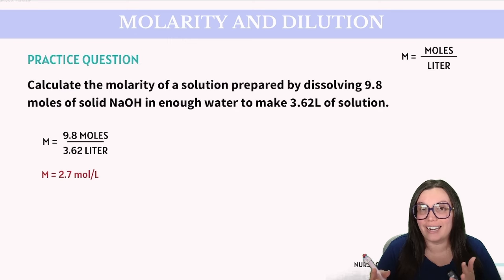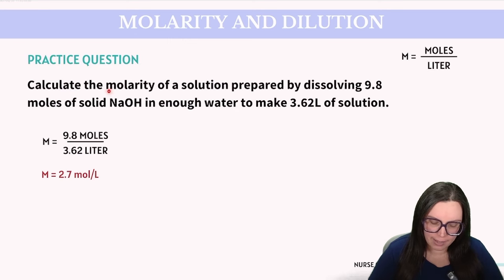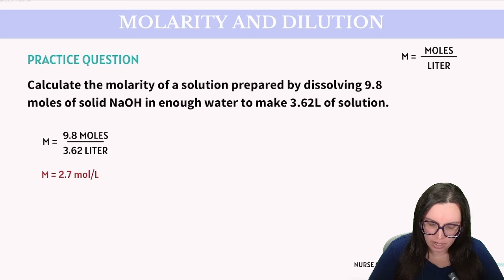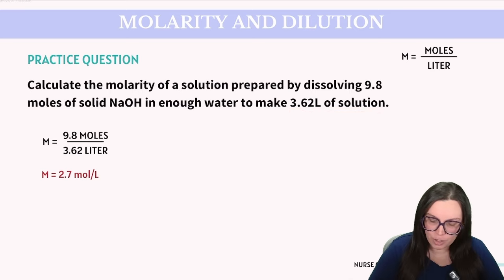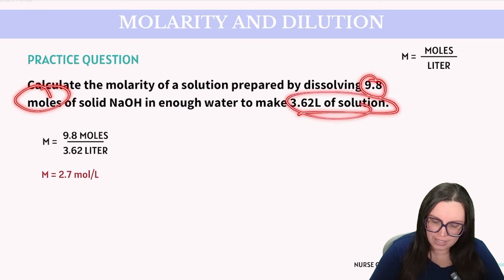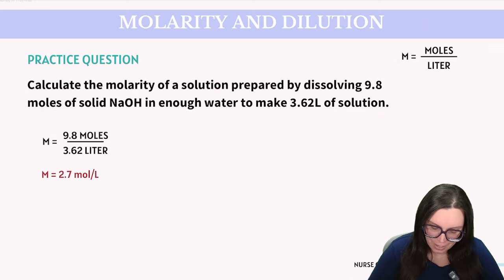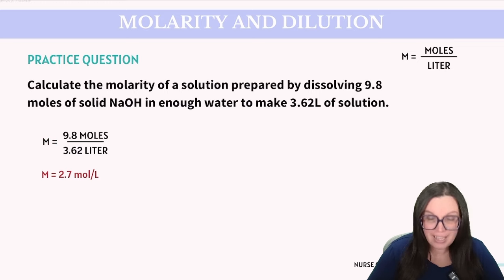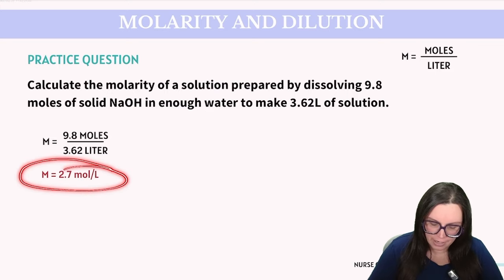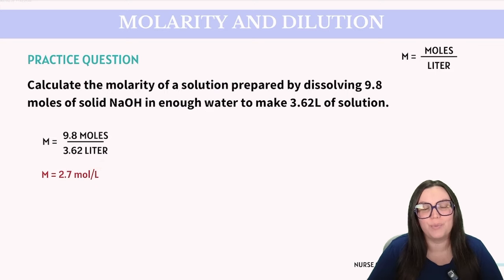Let's take a look at an example: calculate the molarity of a solution prepared by dissolving 9.8 moles of solid NaOH in enough water to make 3.62 liters of solution. We know our moles and our volume in liters, so we plug them into the molarity equation: M = 9.8 moles ÷ 3.62 liters, which gives us a molarity of 2.7 moles per liter.